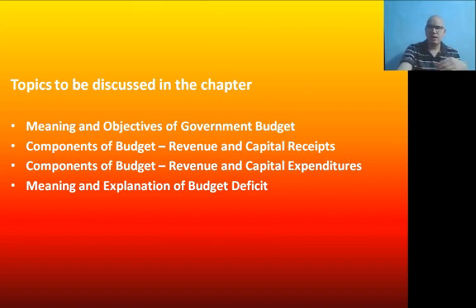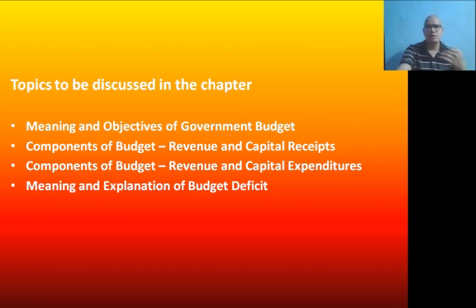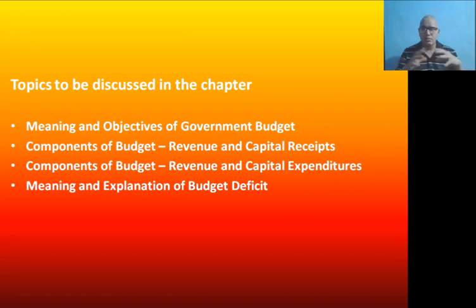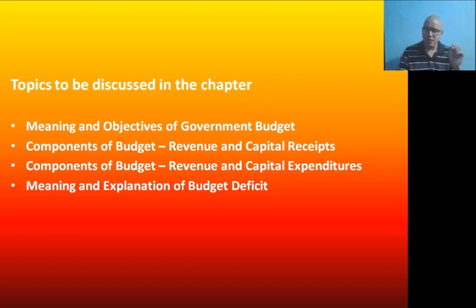Without further delay, let us start today's class. But first, let us recall a few things from our previous class. We have already discussed the meaning of government budget and the components of budget. We classified the components of budget into two categories: one in terms of affecting assets and liabilities of the government, and the other in terms of income and expenditure. We took the second part — classifying components on the basis of receipts and expenditure — and divided them into budget receipts and budget expenditure.